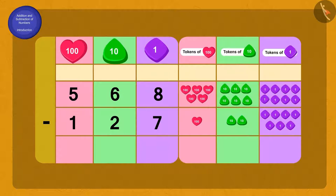On subtracting the digits 8 and 7 in the ones place, we get 1.